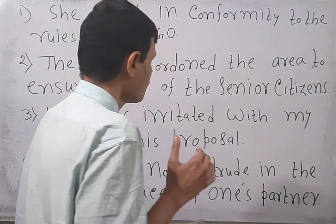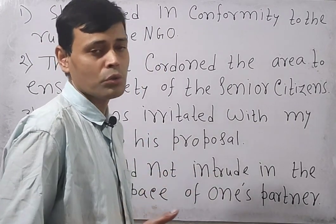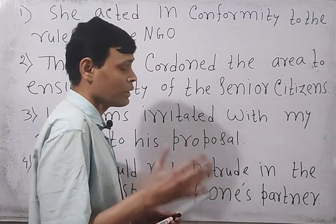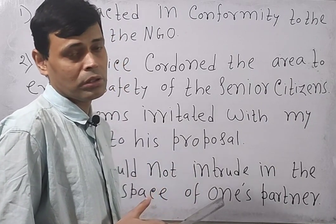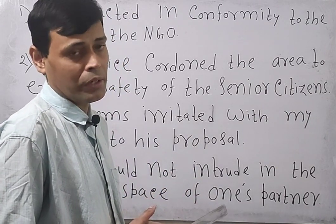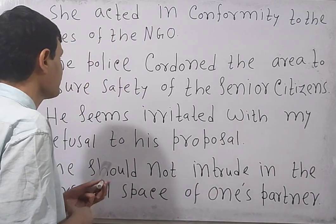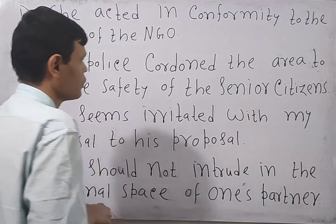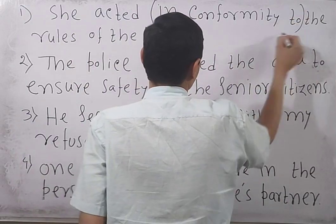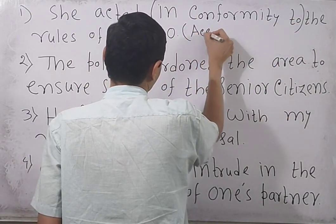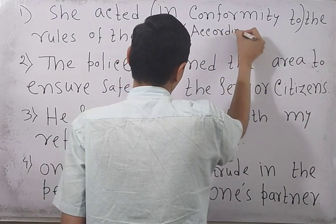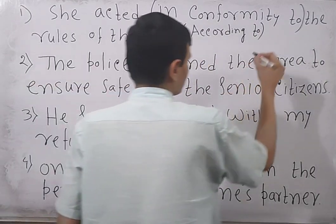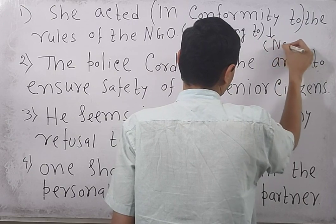If I say 'in conformity to,' it means 'according to.' Had it been 'on conformity to' or 'with conformity,' it could have been a big mistake or error. But here what is written is 'in conformity to the rules of the NGO.' This is a phrase meaning 'according to,' and the sentence does not have any error. Therefore, in the options you need to select 'no error.'